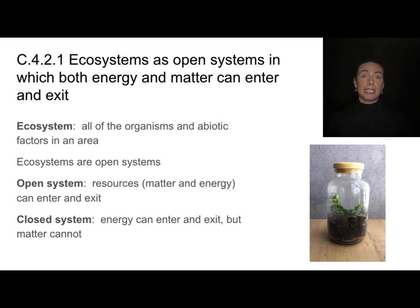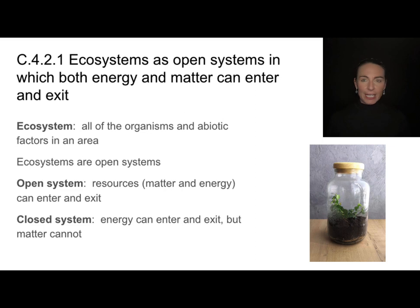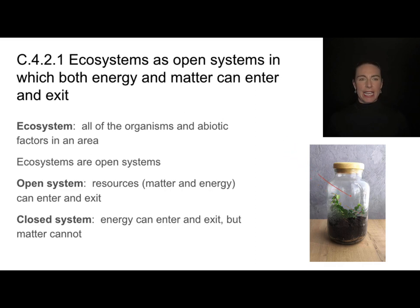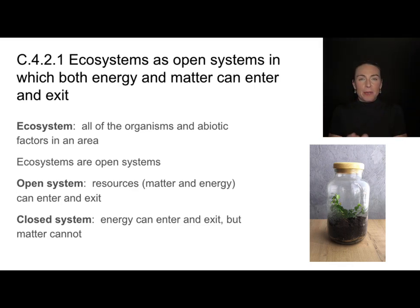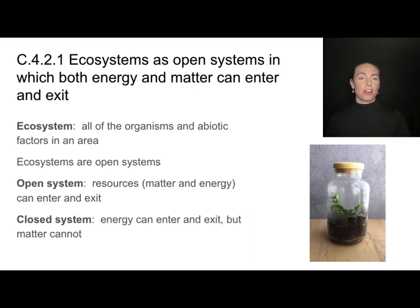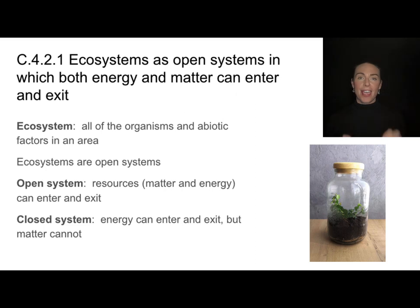Organisms are open systems, meaning matter and energy can enter and exit. Now ecosystems are not closed systems. A closed system is one where energy can enter, like light energy, but matter cannot. The earth is a relatively closed system, but each ecosystem — this desert, that rainforest, this tundra — those are open and resources, matter, and energy can enter and exit.